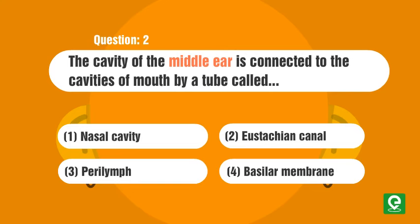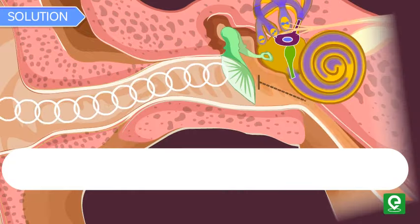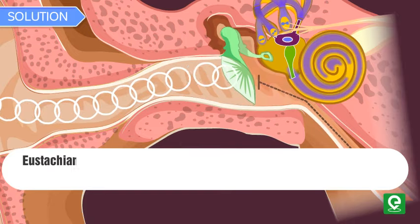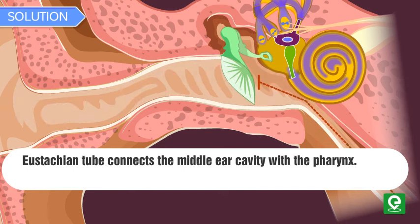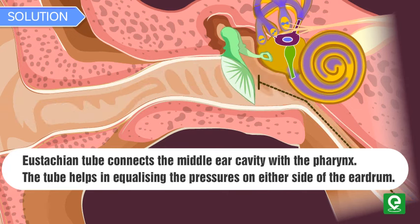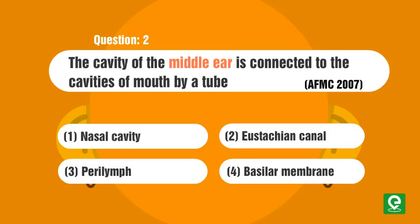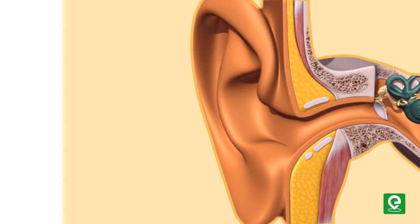This question was asked in AFMC 2007. Solution: Eustachian tube connects the middle ear cavity with the pharynx. The tube helps in equalizing the pressures on either side of the eardrum. Hence, option two is the correct answer.